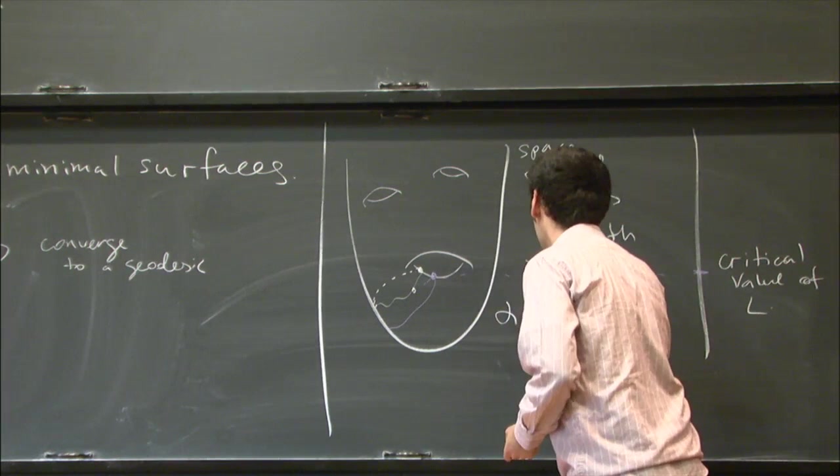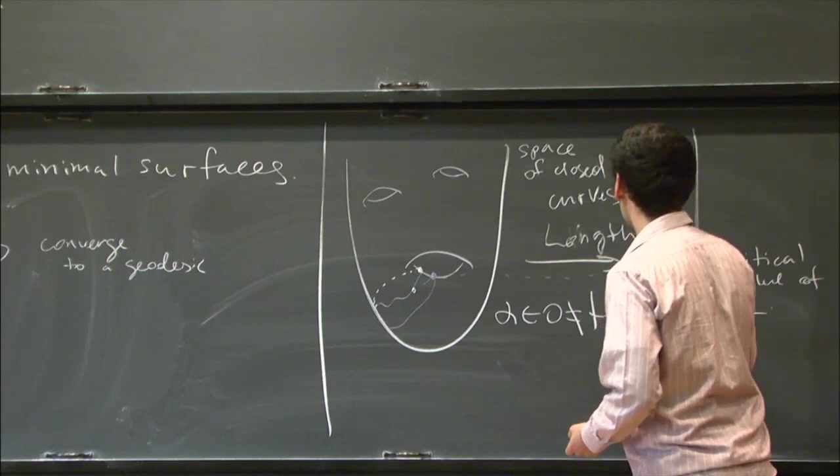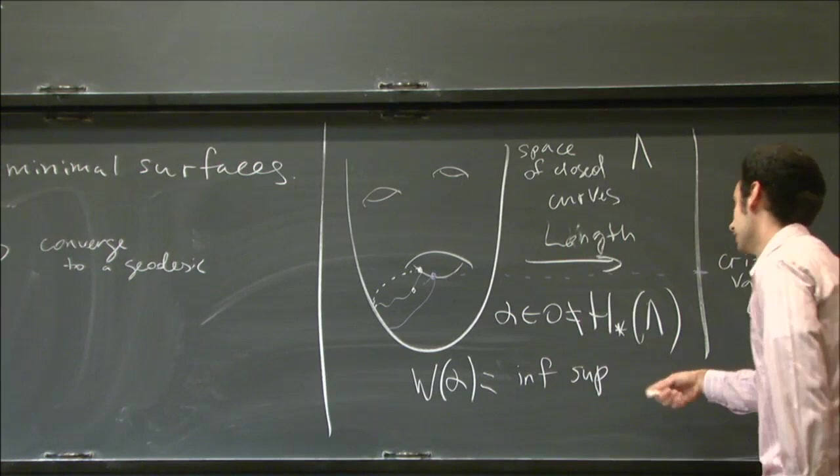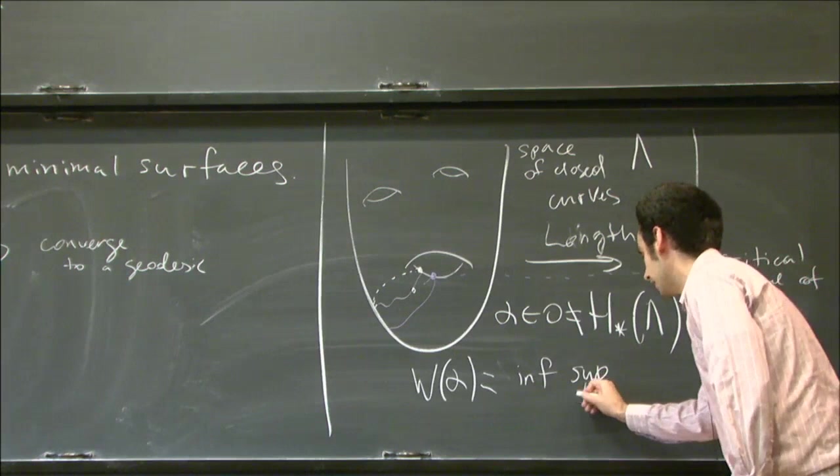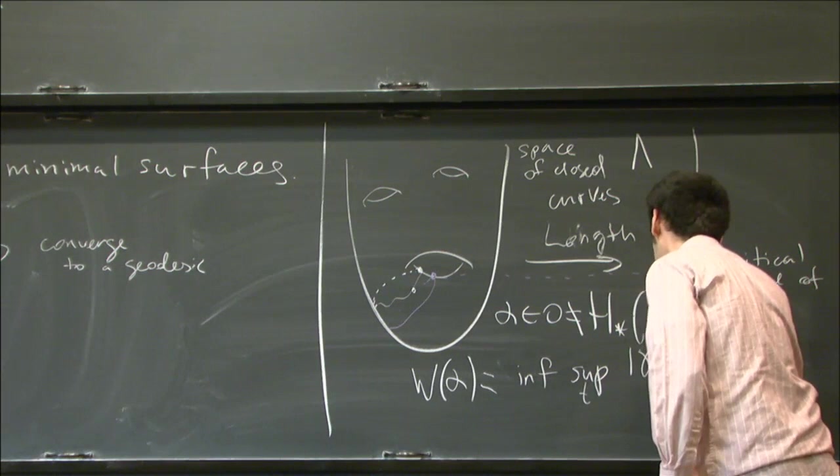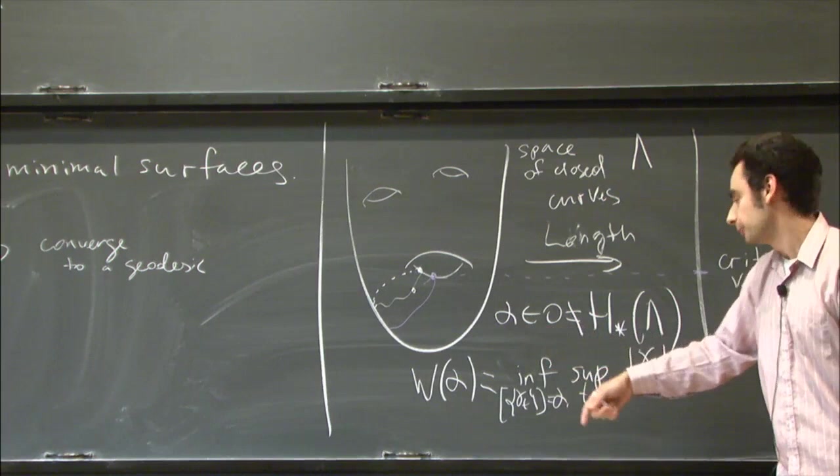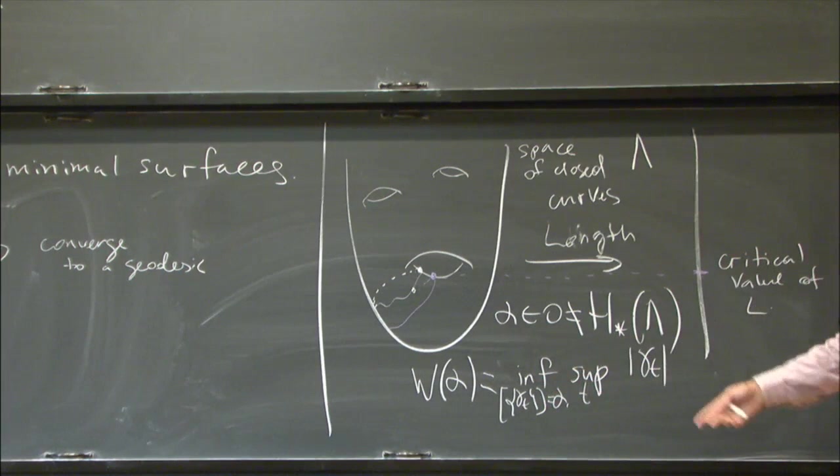If you have some non-trivial element in the homology of your space, let's call it lambda, then you can define w(lambda) or width of lambda as the smallest possible maximum in all families which correspond to that homology class. So we take the supremum, the maximum over the length of all curves in the family, and then we take the infimum, the minimum over all families which represent that class. This is why min-max theory is called min-max theory—minimum and maximum.